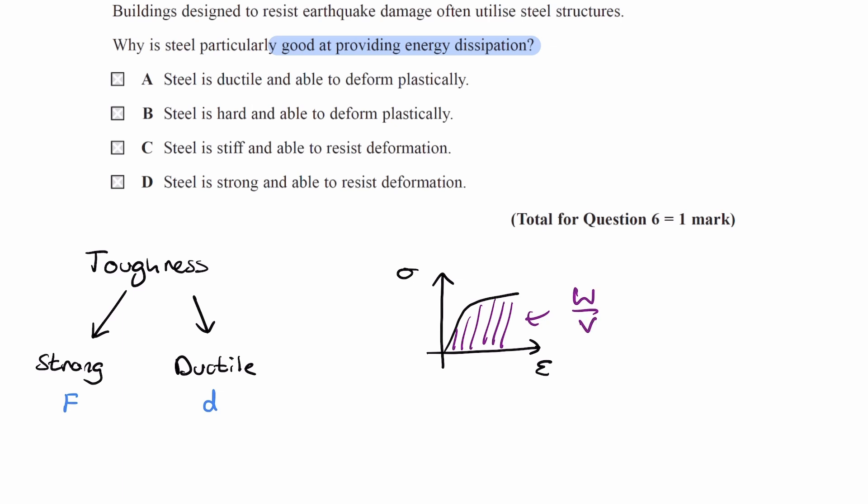We can make that area bigger by making the curve higher and wider. Making it higher means making the material stronger, because higher stress means it's a strong material. Making it wider means it's more ductile. If the plastic deformation region is longer, that is indicative of it being a ductile material.